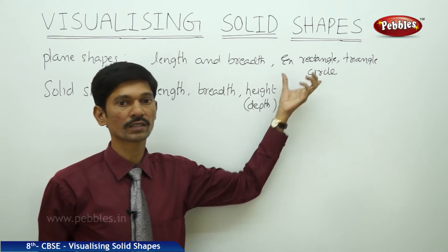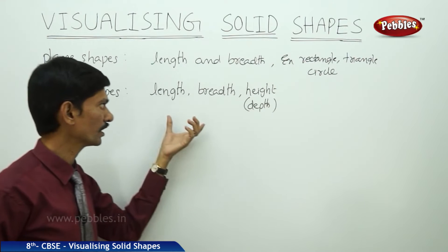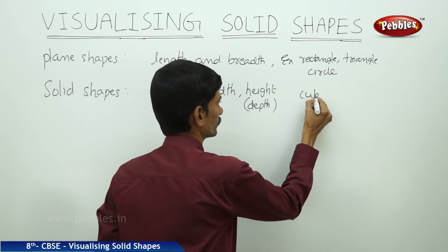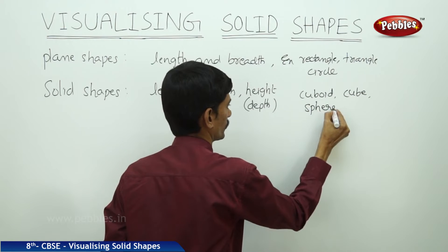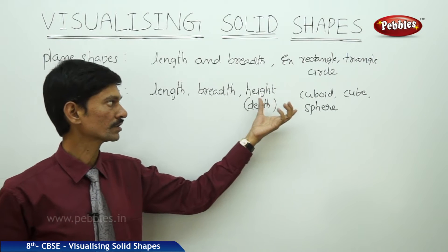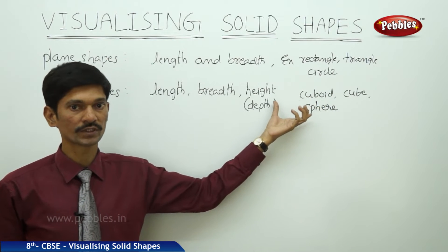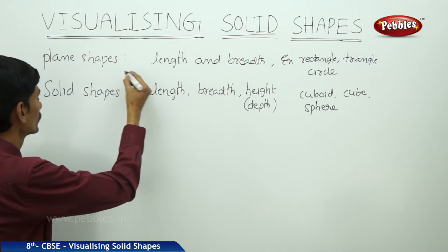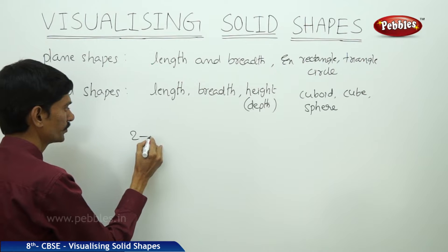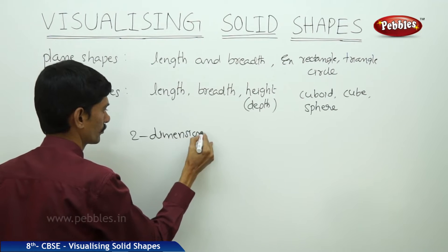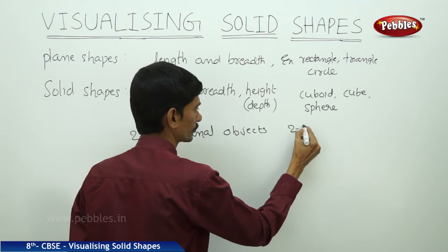Rectangle, triangle, and circle have only two measurements like length and breadth but no thickness or height. Whereas cuboid, cube, and sphere have three dimensions: length, breadth, and height. So these objects are called solid objects or solid shapes. Plane shapes have only two dimensions, so they are called two-dimensional objects or simply 2D objects.